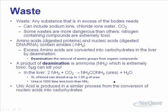Uric acid is another ammonia-containing molecule. It can be used to produce carbohydrates via deamination, producing a similar compound. Uric acid is basically the product made from nucleic acids when they're turned into carbohydrates.